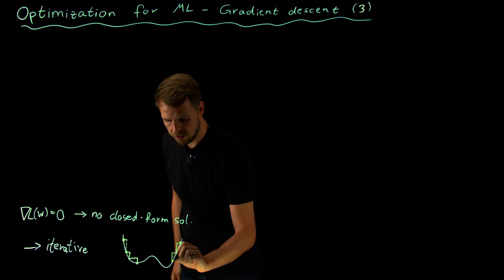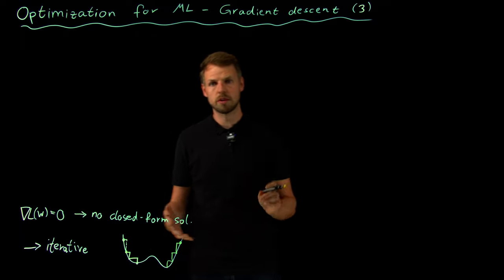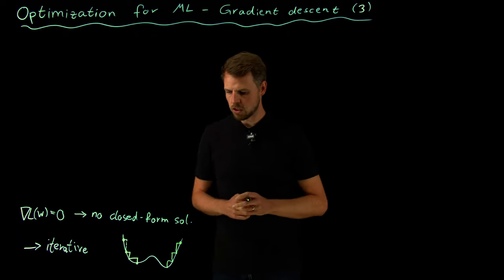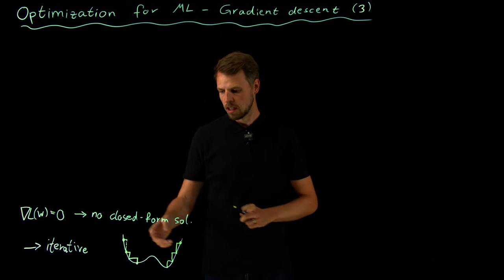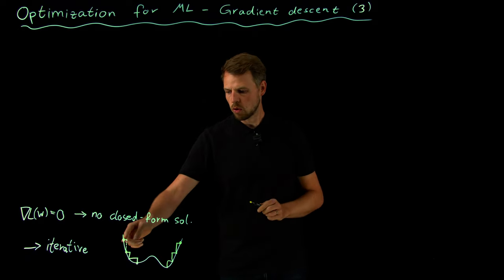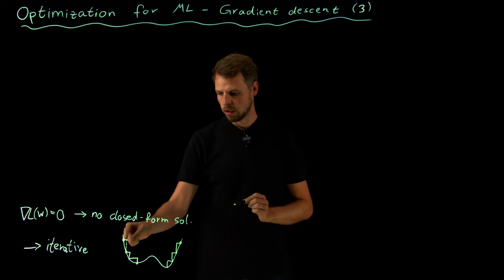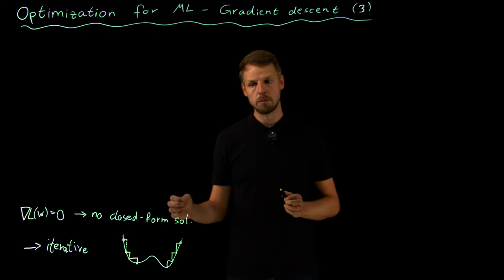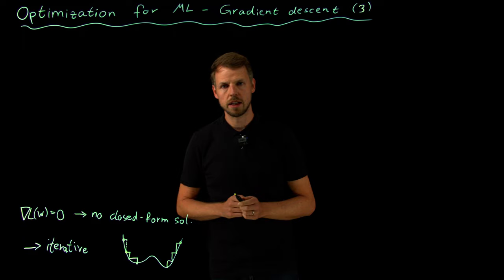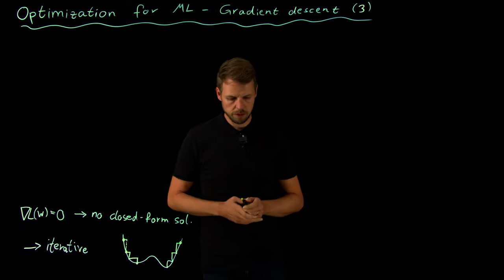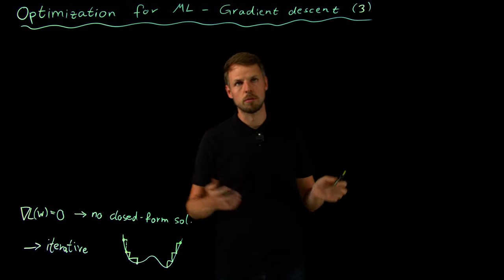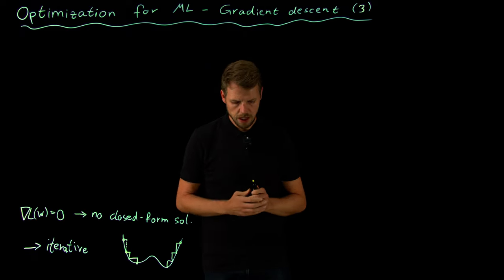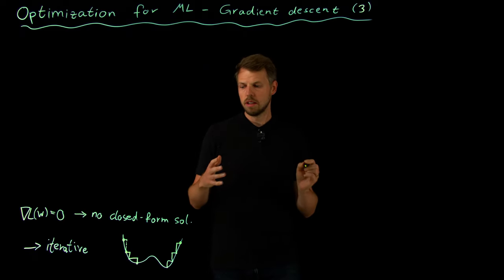Starting from a different point will give us a different local minimizer — in some cases the global minimum — but we don't know this beforehand. In higher dimensions this is extremely hard to visualize, so finding a good initial guess for the parameter w is very important to ultimately find a good optimizer.